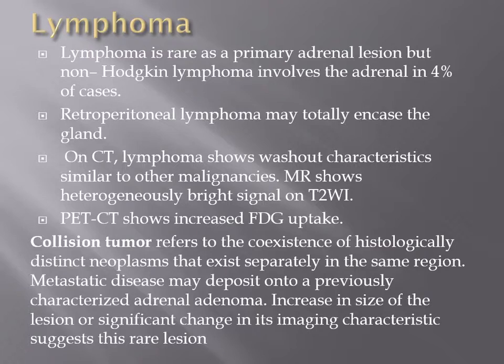Lymphoma is a rare primary adrenal tumor, non-homogeneous in 4% of cases. Retroperitoneal lymphoma may encase the gland. CT shows washout characteristics similar to malignancy; on MRI it shows heterogeneous bright signal on T2; PET-CT shows increased FDG uptake. A collision tumor refers to the co-existence of two histologically distinct neoplasms in the same region — for example, metastatic disease deposited on a previously characterized adrenal adenoma. An increase in size or change in imaging character of a region suggests this rare diagnosis.